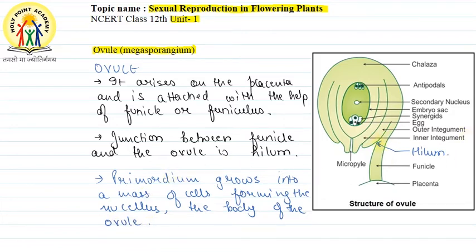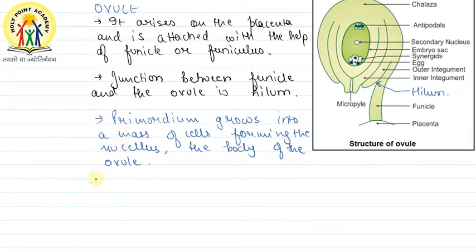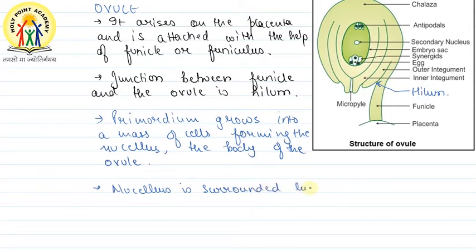The nucellus is the inner part of your ovule. To cover and protect it, integuments are needed. The nucellus is surrounded by inner and outer integuments, which are present to provide protection.